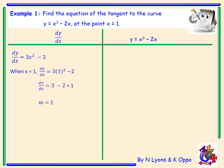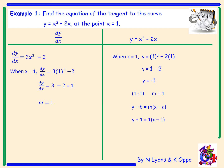Now that we have the gradient, we need to find our y coordinate when x is 1. To do this we substitute 1 into our curve's equation: 1 cubed minus 2 times 1 gives 1 minus 2, so y equals negative 1. We now have a point (1, -1) and a gradient of 1. To find the tangent's equation we use y minus b equals m bracket x minus a, substituting in to get y plus 1 equals 1 bracket x minus 1. Expanding and rearranging gives the equation of the tangent: x minus y equals 2.